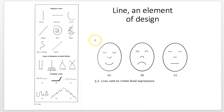This is an example of pareidolia — we see human faces in even simple lines and want to see those faces. Be aware of that when designing and drawing, because things are going to automatically read as something when we look at an image, such as faces.